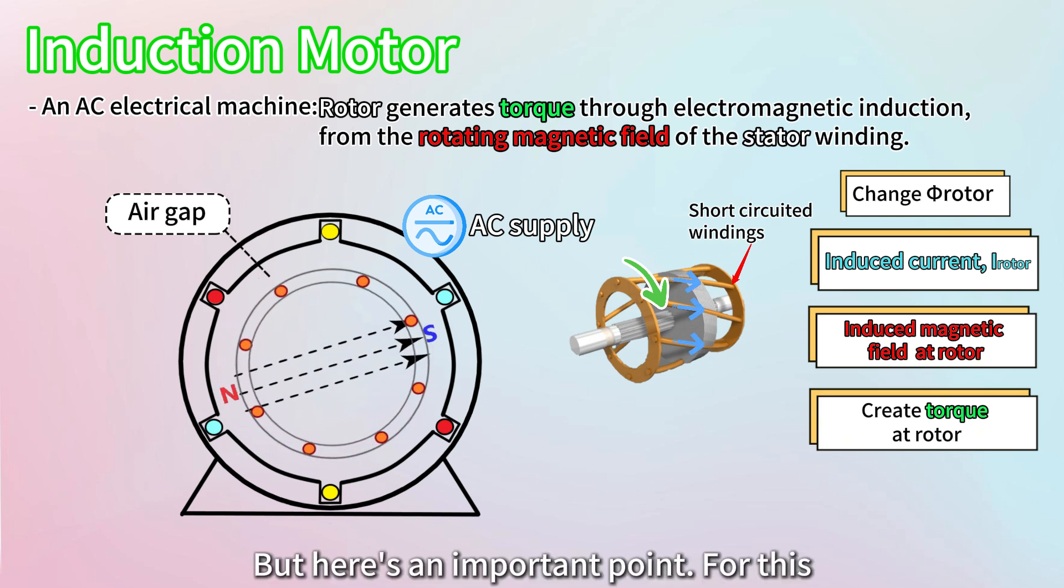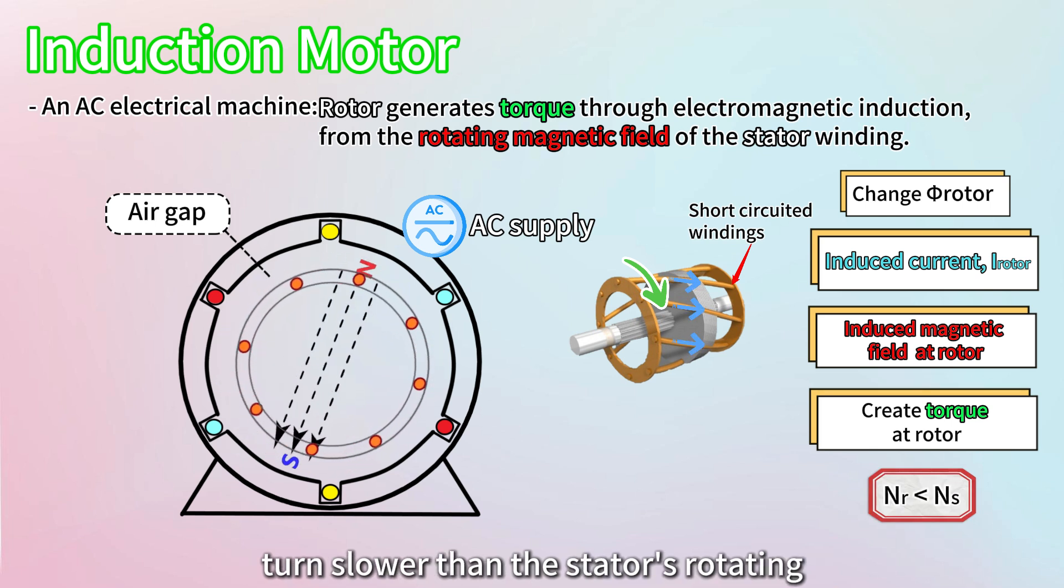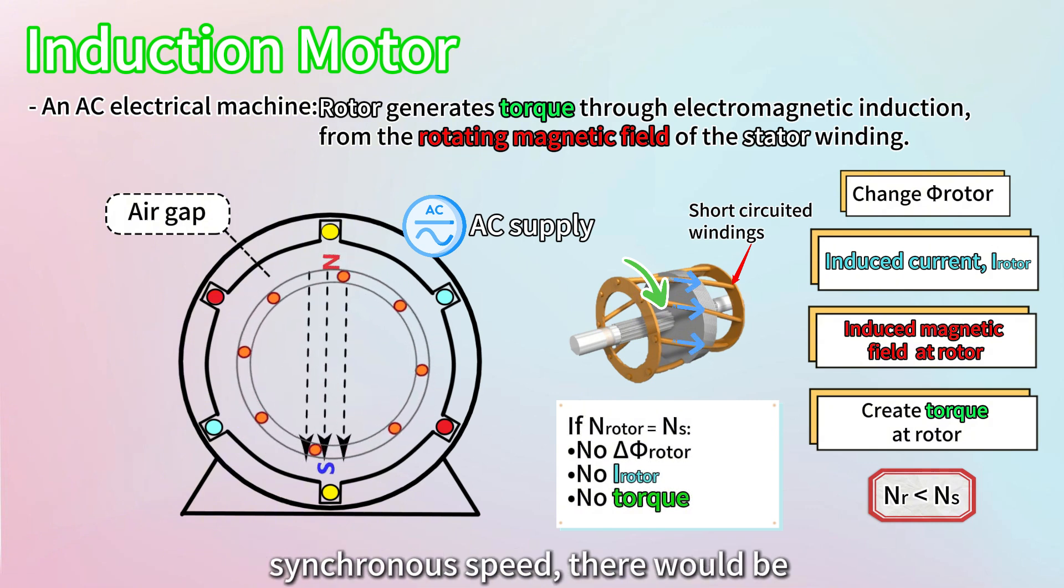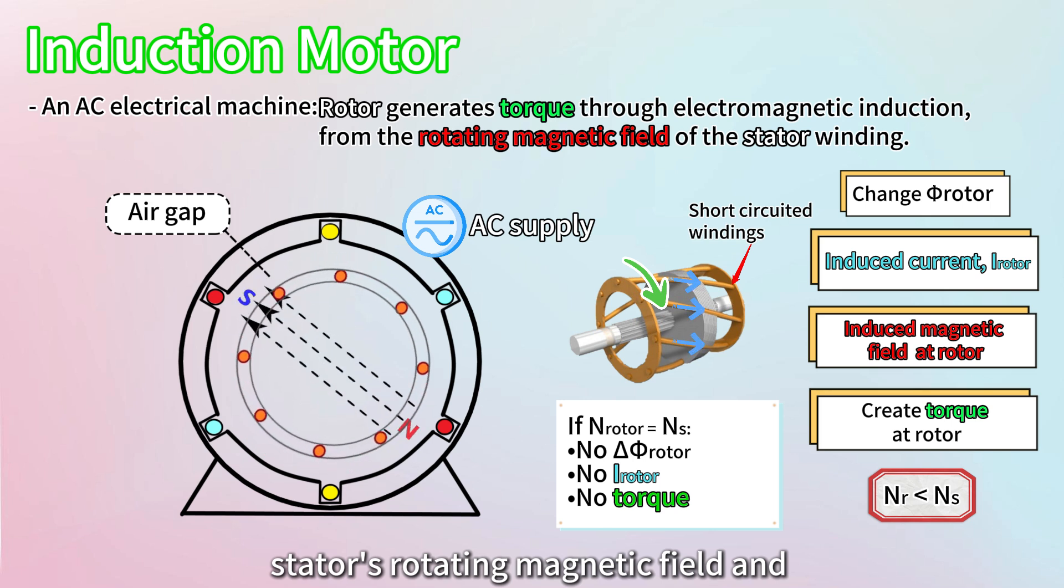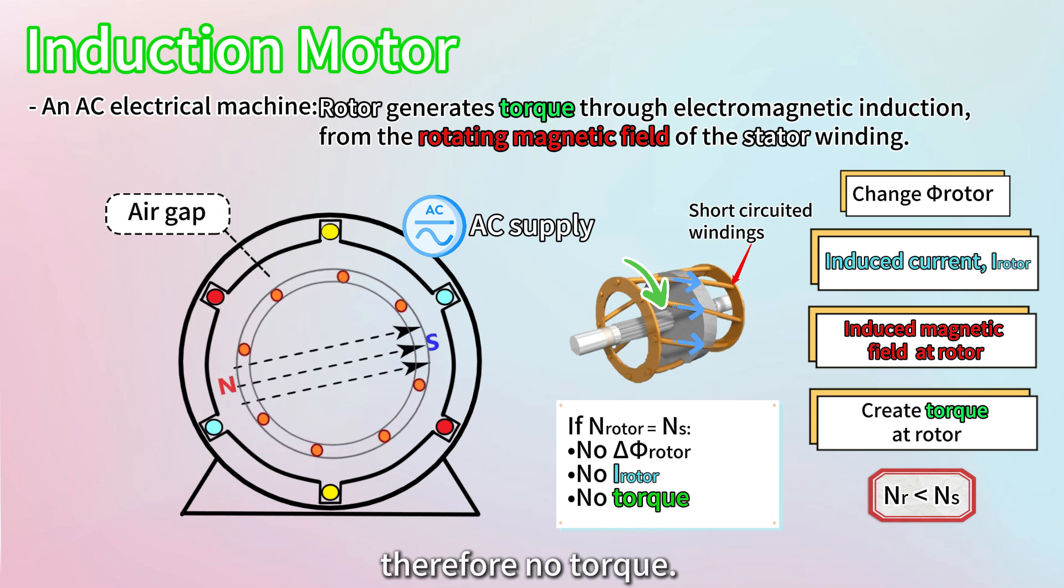But here's an important point. For this torque to happen, the rotor must always turn slower than the stator's rotating magnetic field. If the rotor matched the synchronous speed, there would be no relative motion between the stator's rotating magnetic field and the rotor windings, meaning no induction and therefore no torque.